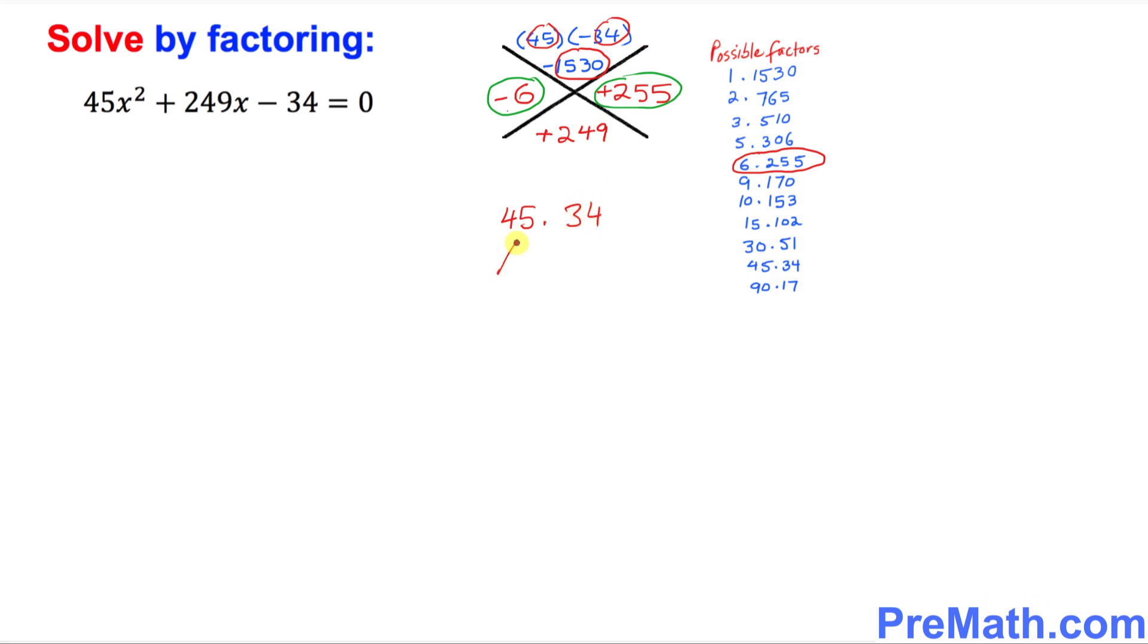Let's individually factor them out. 45 could be written as 3 times 15 and 34 could be written as 17 times 2. So far so good. Now here you look at this thing, just pair up these ones: 15 times 17 and 3 times 2, and you know that 15 times 17 is 255 and 3 times 2 is 6.